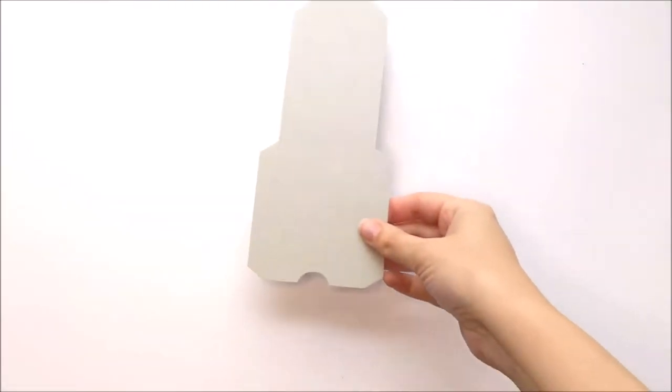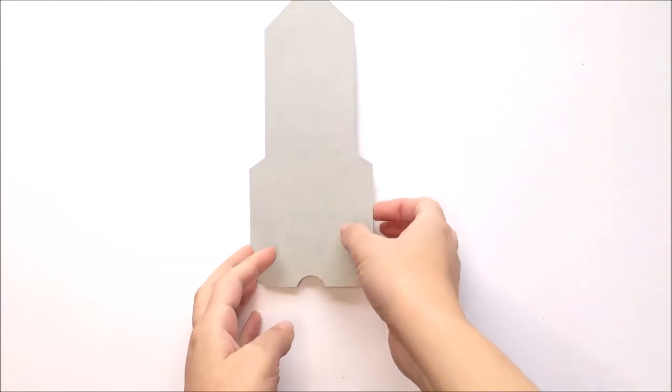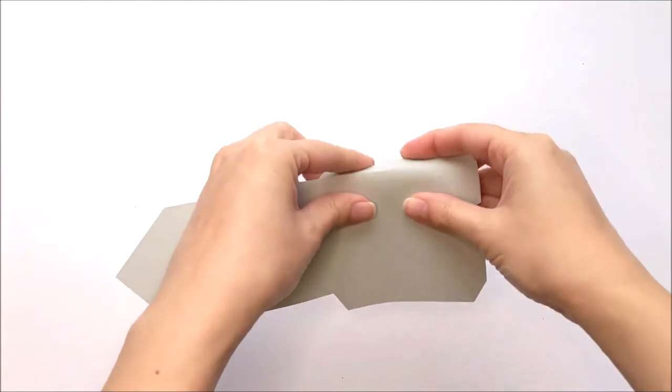Start by cutting out your pieces on your cutting machine, and then depending on which year you want to do, you'll just cut out whichever numbers you need. You're going to start by pre-folding the holder along the score lines.